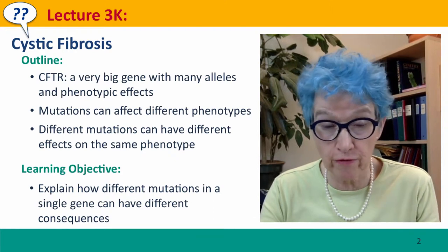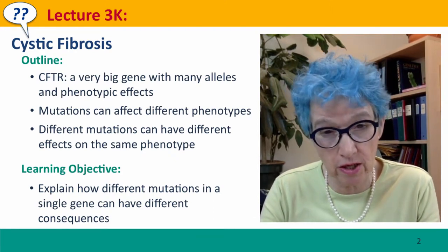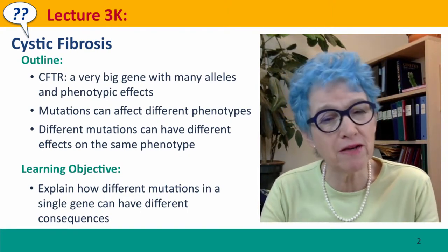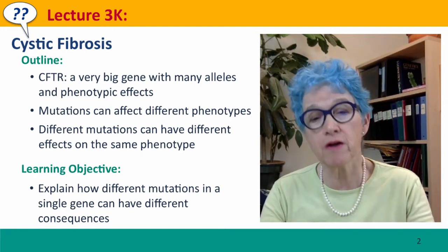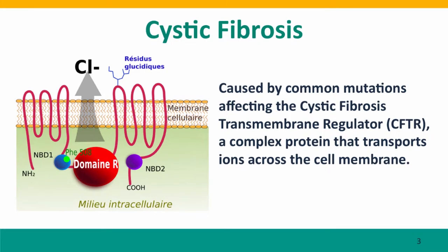These mutations are unfortunately very common, and cystic fibrosis is a very serious genetic disease. Because it's a big gene, there are many different kinds of mutations it can have, and these mutations can have different effects on phenotype. Here's a diagram of the cystic fibrosis transmembrane regulator protein. The red loops are parts of the protein that go back and forth through the membrane of the cell, creating a channel that chloride ions can pass through. The large red domain is a regulatory domain that controls when this chloride transport is allowed to happen. This green spot marks the site of a particularly common mutation: deletion of the codon for amino acid phenylalanine at position 508.